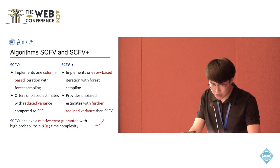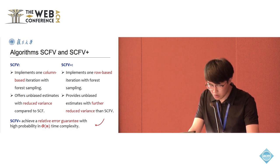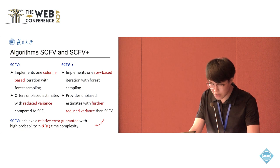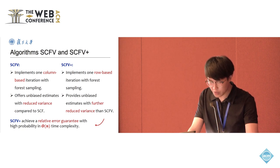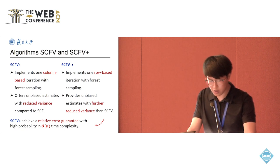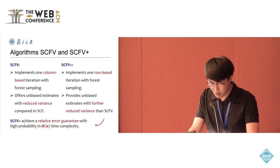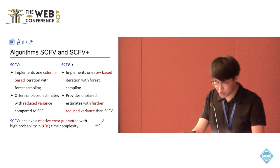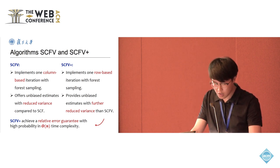From the perspective of opinion evolution, the column-based iteration of SCFV simulates opinion propagation in the direction of the edge. Conversely, the row-based iteration of SCFV+ allows opinions to evolve in the opposite direction.